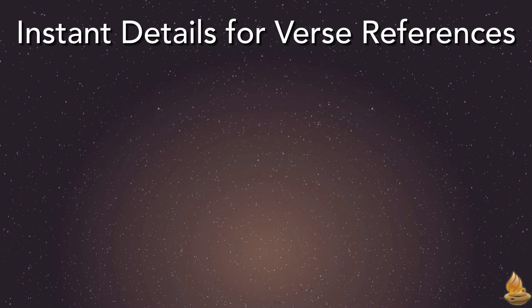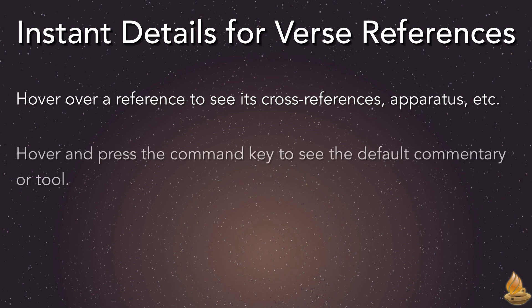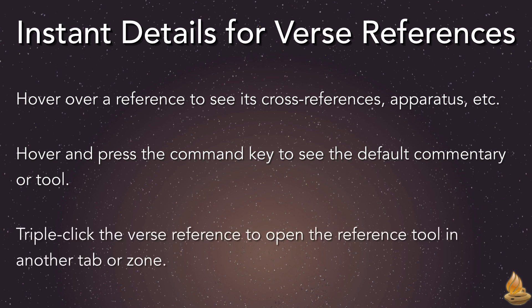Using Instant Details with verse references, we can hover over a reference to see its cross-references, apparatus, or other kinds of information, which varies with the text or translation under study. We can also hover and press the command key to see the default commentary or tool, or triple-click the verse reference to open the reference tool in another tab or zone.